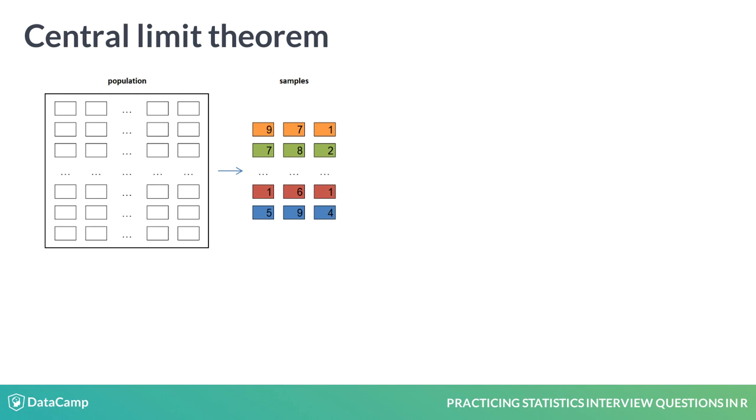You draw random and independent samples of three neighbors and collect the data on how much the neighbors liked the movie on a scale from 1 to 10. In the picture, the three orange rectangles represent the first sample, the three green rectangles the second sample, and so on.